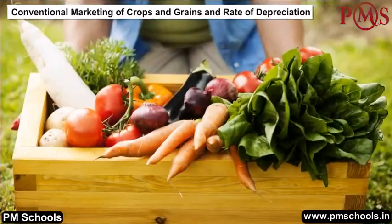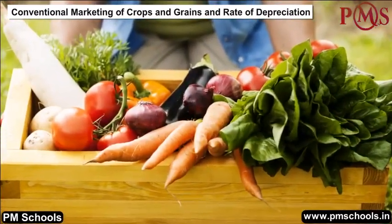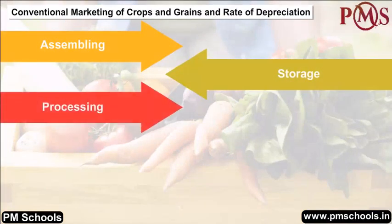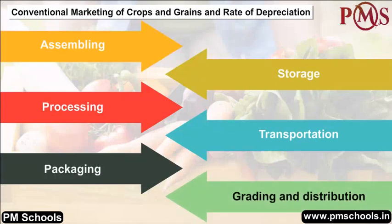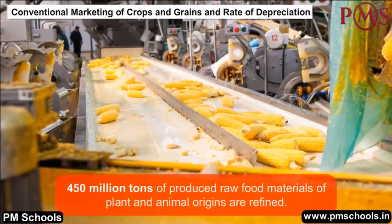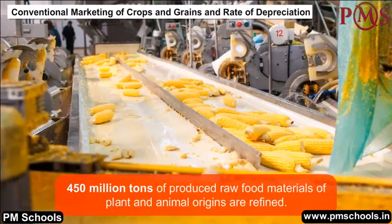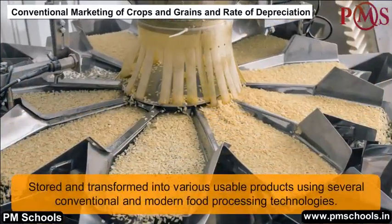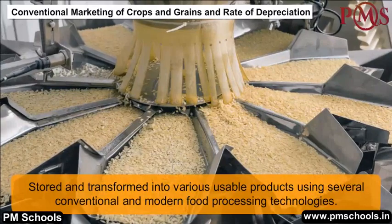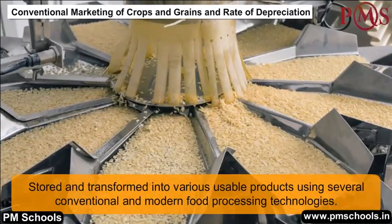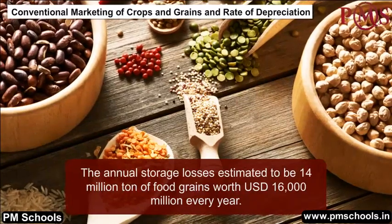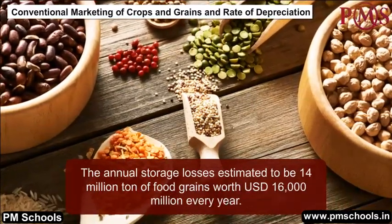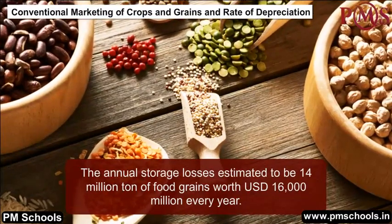Agricultural marketing is an entire process consisting of assembling, storage, processing, transportation, packaging, grading, and distribution of different agricultural commodities throughout the country and abroad. In India, 450 million tons of produced raw food materials of plant and animal origins are refined, stored, and transformed into various usable products using conventional and modern food processing technologies. Annual storage losses are estimated to be 14 million tons of food grains worth USD $16,000 million every year.